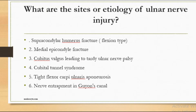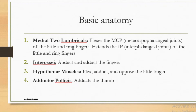Regarding injury of the ulnar nerve: it gets injured in supracondylar humerus fracture, medial epicondylar fracture, cubitus valgus leading to tardy ulnar palsy — where the palsy develops later on. It may also be injured in cubital tunnel syndrome, or if tight flexor carpi ulnaris is present, as the nerve passes beneath it. Entrapment also occurs in Guyon's canal at the wrist.